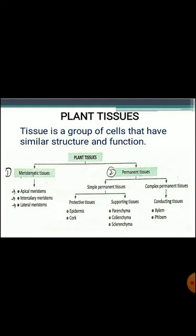Here is the classification of plant tissue. Plant tissue is divided into meristematic tissue and permanent tissue. Meristematic tissue is further divided into three parts: apical meristem, intercalary meristem, and lateral meristem. Permanent tissue is divided into simple permanent tissue and complex permanent tissue. Simple permanent tissue includes protective tissue (epidermis and cork) and supporting tissue (parenchyma, colenchyma, and sclerenchyma). Complex permanent tissue forms conducting tissue made up of xylem and phloem.